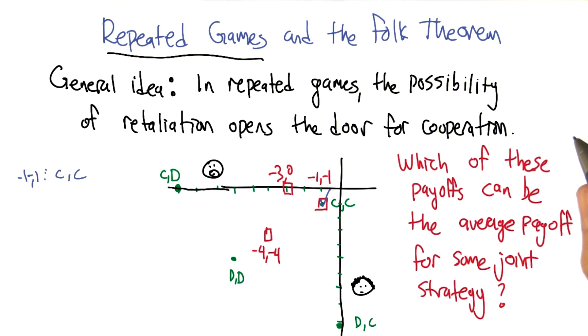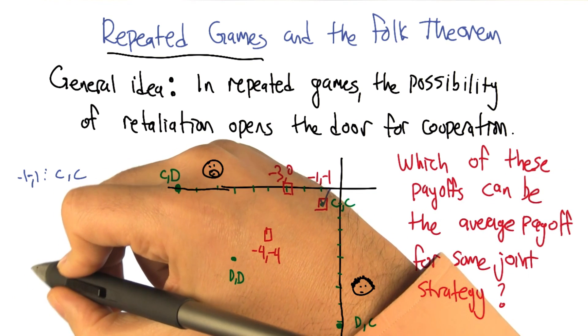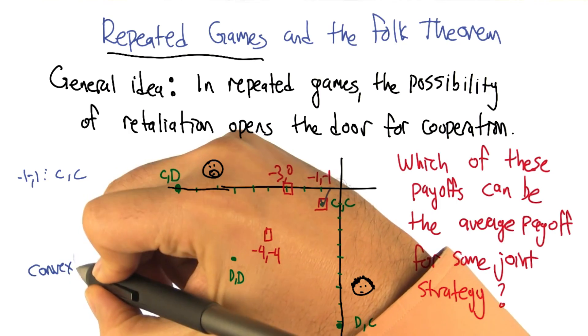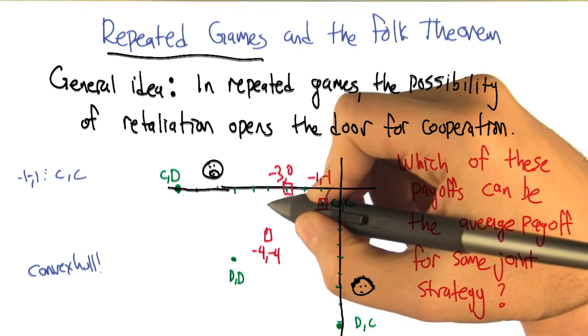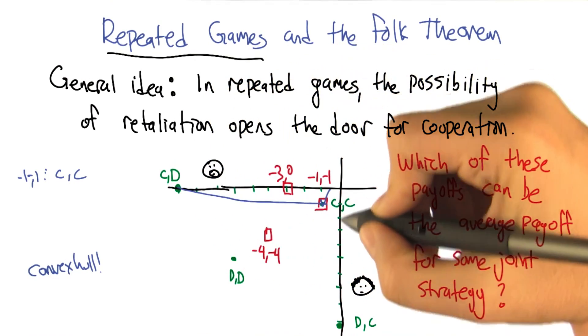They form a kind of convex hull. Aha. And I thought, well, surely that's just an accident of the numbers. And then I thought, oh wait, of course. We're talking about averages here. So that means that all possibilities have to be inside the convex hull of the outer points. So if I drew a line between those four points, I would end up with all possible achievable averages.